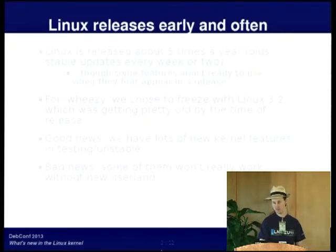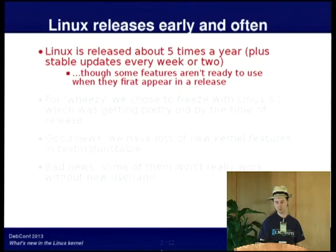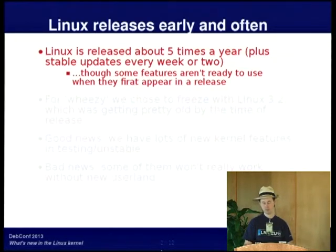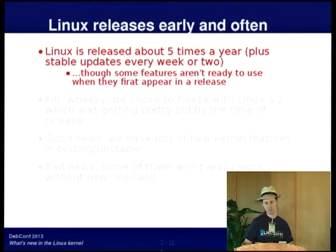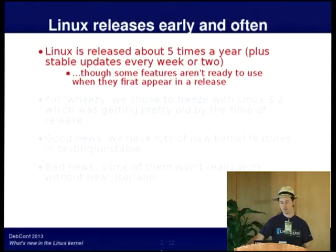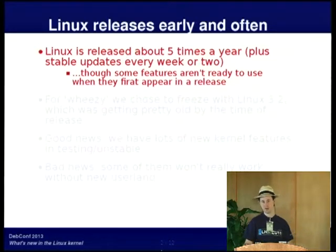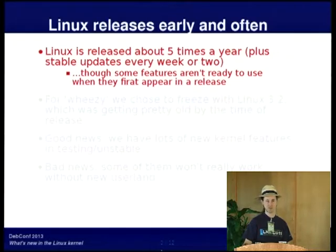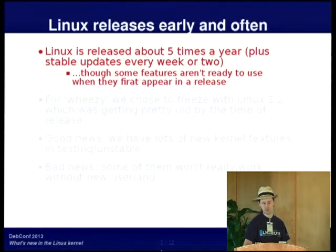The Linux kernel is released early and often — about five times a year for the major stable releases, and there are updates with bug fixes every week or two. Some of the features that turn up in these releases aren't quite ready, either because they haven't been fully debugged, there are some bits still to fill in, or you need new userland. That's one of the things I'm going to talk about today.